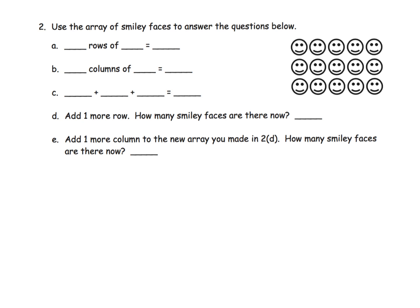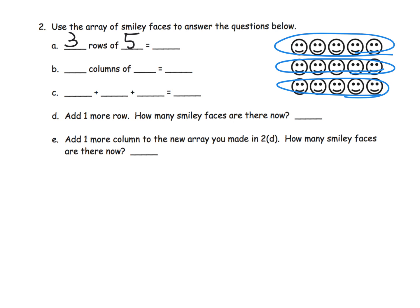Here we're going to do more of the same, but with some scaffolding removed. We're going to look at this array of smiley faces. How many rows do we have? We have three rows: one row, two rows, three rows. So we have three rows of 5 — because I counted 1, 2, 3, 4, 5 — and that's equal to 15. A cool thing here is this is a beautiful opportunity to skip count: 5, 10, 15. There's our 15.